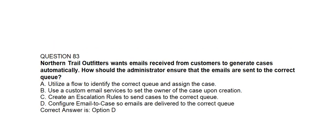Question number eighty-three. Northern Trail Outfitters wants emails received from customers to generate cases automatically. How should the administrator ensure that the emails are sent to the correct queue? Option A: Utilize a flow to identify the correct queue and assign the case. Option B: Use a custom email service to set the owner of the case upon creation. Option C: Create an escalation rule to send cases to the correct queue. Option D: Configure Email to Case so emails are delivered to the correct queue. Correct answer is Option D.